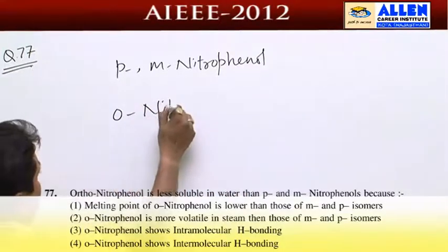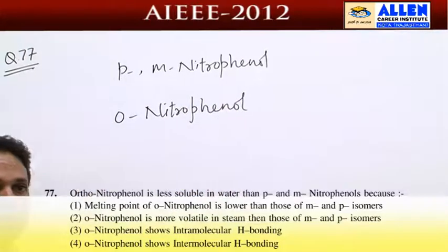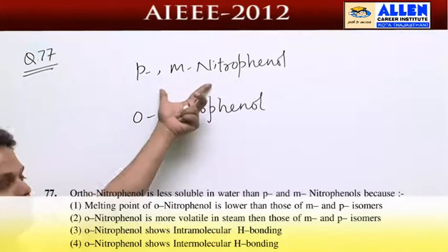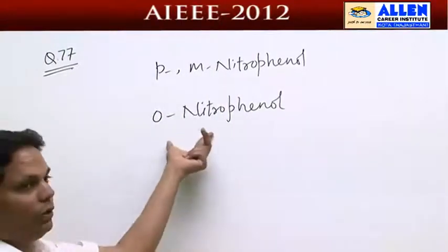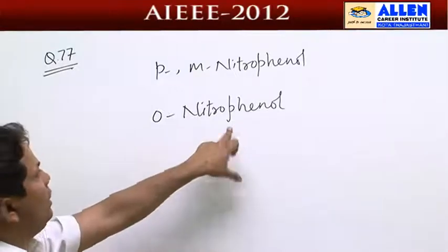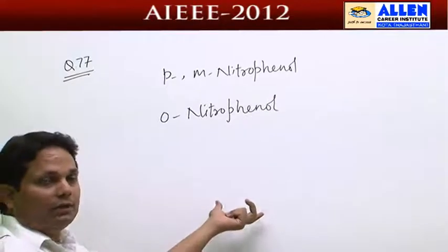Question is, para and meta nitrophenol to water is dissolved, but ortho nitrophenol dissolve why not? Because para and meta nitrophenol water intermolecular hydrogen bonding is it?